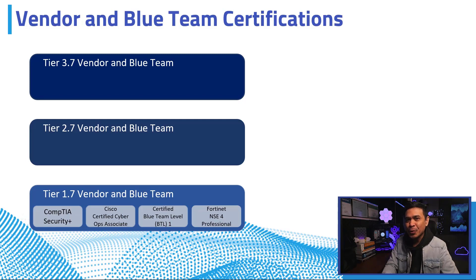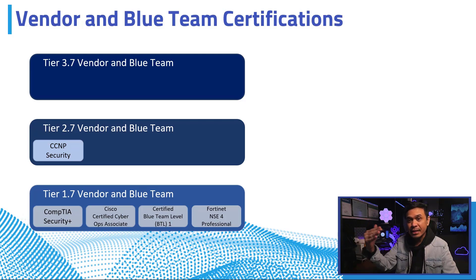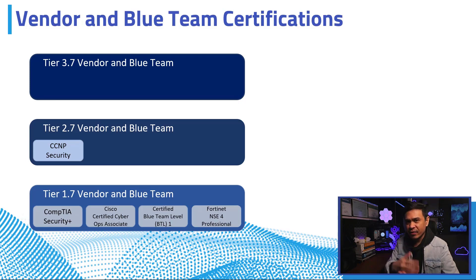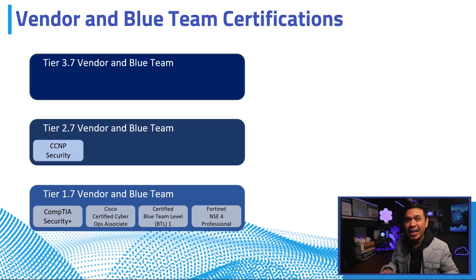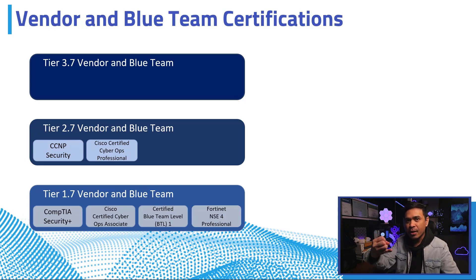Let's move to tier 2. We have CCNP, or Cisco Certified Network Professional, in Security. This makes the most sense because it is a higher level of CCNA. We have the SCOR core exam and you need to choose one more concentration. Check the link below to know more about the best CCNP exam combinations. If you want to move away from Cisco-specific solutions, you can take Cisco Certified Cyber Ops Professional, where they talk about SIEMs, threat modeling, threat hunting, Cisco Firepower, packet captures, PCAP analysis, and many others.